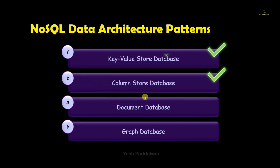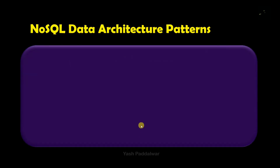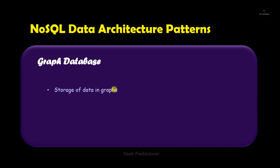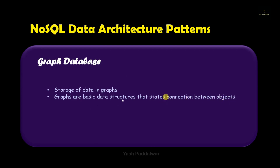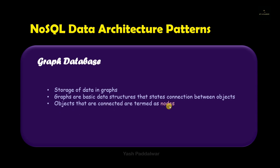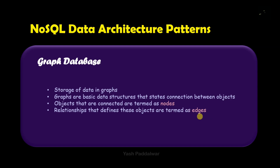Now let's move on to the last NoSQL data architecture pattern, which is graph database. Graph database stores the data in the form of graphs — the same graphs you may have seen in data structures and algorithms. Graphs are basic data structures that define the relationship between objects. In this context, objects are called nodes and these nodes are connected to every other node. The connections used to define the relationships between these nodes are termed as edges. So a graph consists of two things: nodes, which are the objects, and edges, which define the relationships between those nodes.